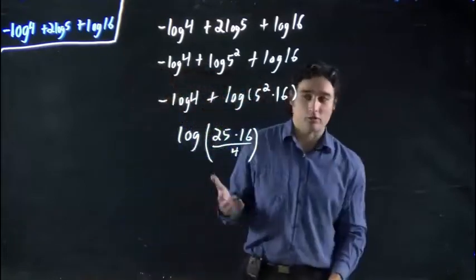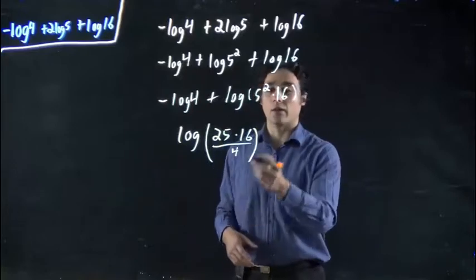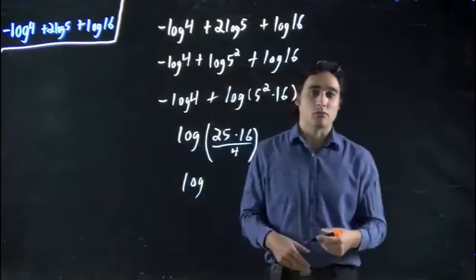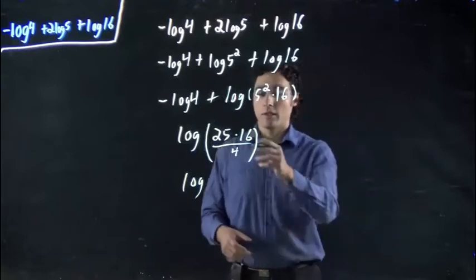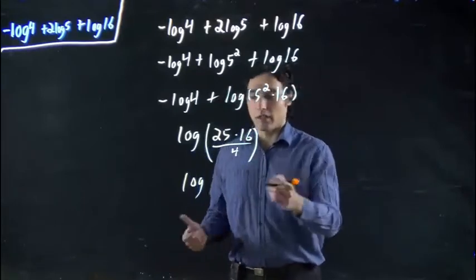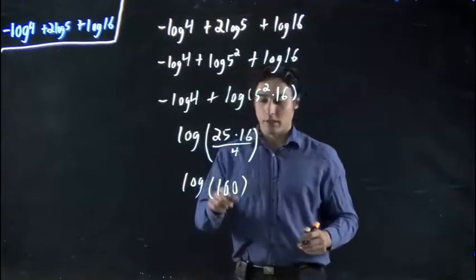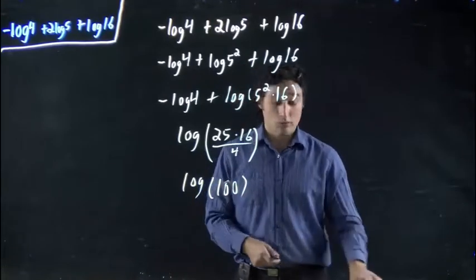Well, now we have a bunch of numbers. We can actually just crunch through them. We can actually figure out what this is, take out our calculator and go, okay, 25 times 16, or 400. 400 divided by 4, 100. Double check for yourself. Make sure you get 100. If not, double check your calculator.